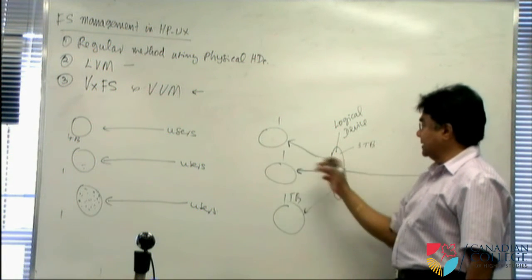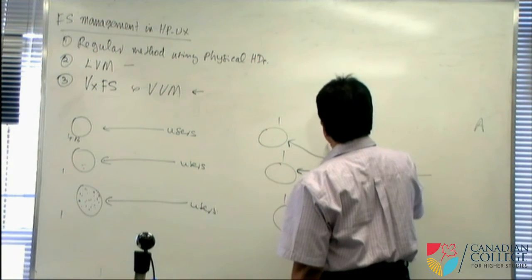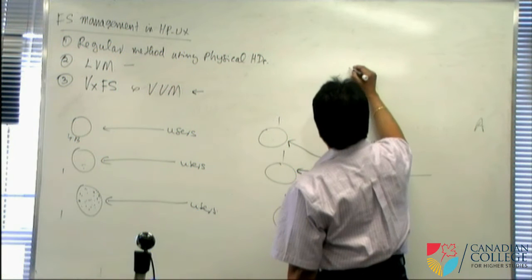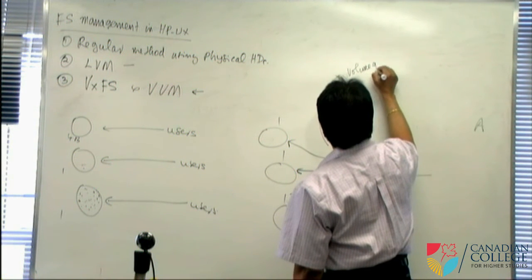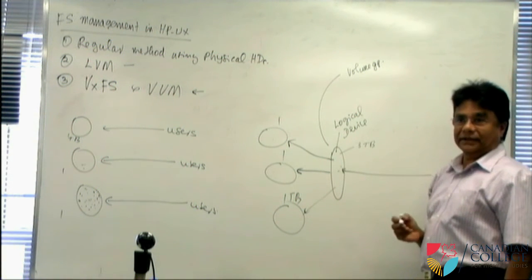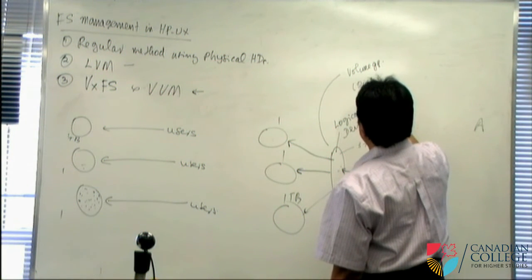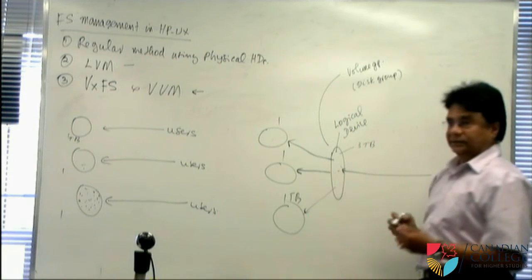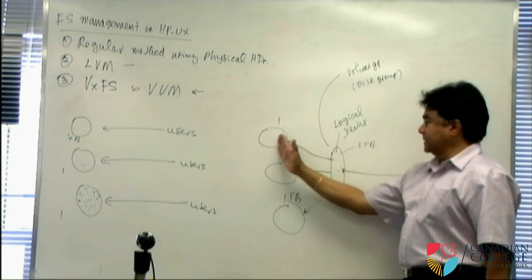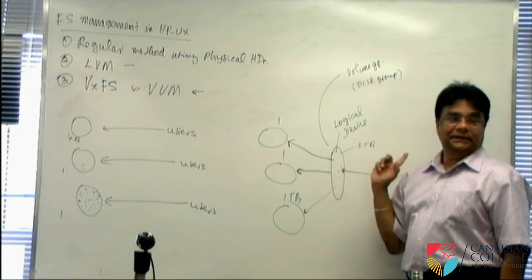When you gather disks and form a group in which the logical device is created, that group is called a volume group in LVM. In Veritas, the equivalent group is called a disk group. After creating the volume group, you no longer access the physical devices directly — only through the meta device.